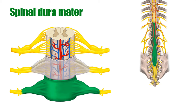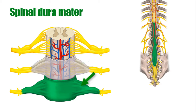As you can see on this diagram, we have the pia mater here, which is below the blood vessels and directly on the spinal cord, the arachnoid mater here, and the dura mater just here, highlighted in green.